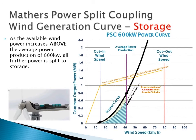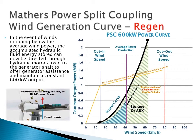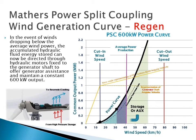As the available wind power increases above the 2-generator vs 2-storage line, set at 600 kW, all further power is split to storage. When wind speeds drop below the average power line, the accumulated hydraulic fluid energy can be directed through the hydraulic generator assist motors fixed to the generator shaft. They then offer generator assistance and maintain a constant 600 kW power production.